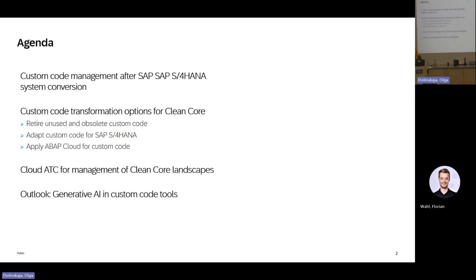Short look at the agenda. We will start with the custom code management inside of S4HANA system after the system conversion, how it should look like. Then we will go through the custom code transformation options for clean core — from retirement of unused code up to the application of ABAP Cloud for the custom code in your landscapes. We will take a look at Cloud ATC, ATC on BTP, what is already possible there, and finally there is an outlook at generative AI in custom code tools.